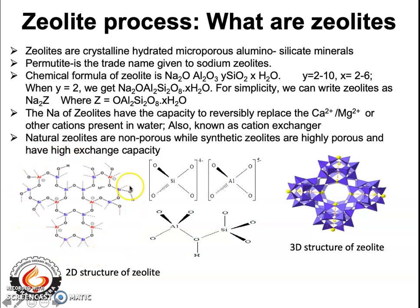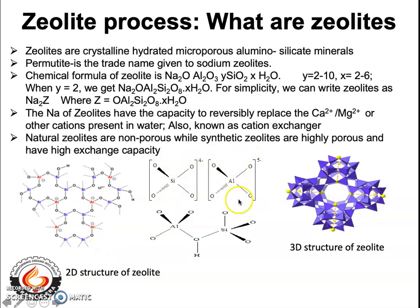These unit building blocks are connected to many more AlO4 and SiO4 tetrahedrons via oxygen atoms to form a three-dimensional network or framework-like structure. All these tetrahedrons enclose big cavities between them, which are responsible for giving zeolite its porous structure. The entire zeolite structure thus carries a net negative charge.